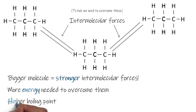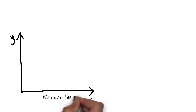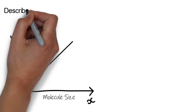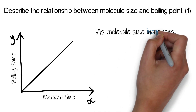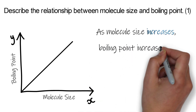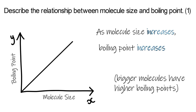Bigger molecule, stronger forces, more energy needed — that gives it a higher boiling point. You might get given a graph where the x-axis shows molecule size, atomic mass, atomic radius, or molecular mass, and the y-axis shows boiling point, with a straight line going up. If asked to describe the relationship, as molecule size increases, boiling point increases. Bigger molecules have higher boiling points — that is what you need to remember.